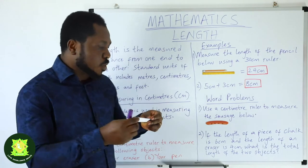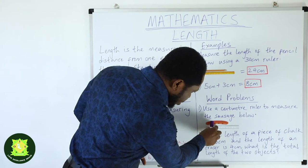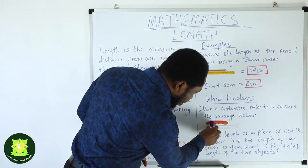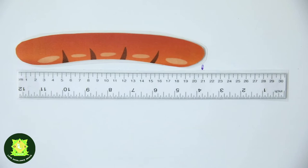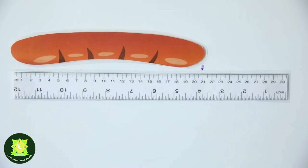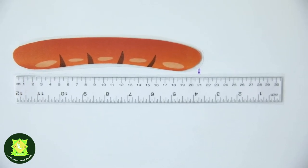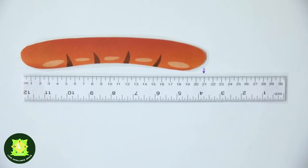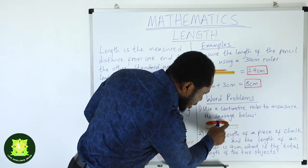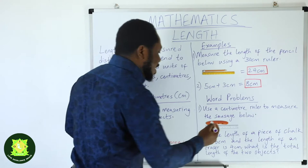Let me get my pen. This is a 30 centimeter ruler and we want to measure the length of this sausage. Counting along the ruler: 1, 2, 3, 4, 5, 6, 7, 8, 9, 10, 11, 12, 13, 14, 15, 16, 17, 18, 19, 20, 21. So the length of the sausage is 21 centimeters.